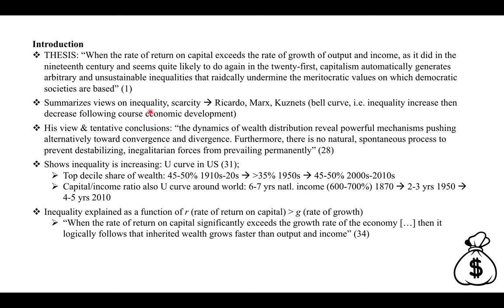He summarizes previous views on inequality and scarcity, especially Ricardo, Marx, and Kuznets. From Kuznets he borrows the bell curve idea that inequality increases and then decreases following the course of economic development — though Piketty actually argues against this and shows it's not the case. He lays out his view that the dynamics of wealth distribution reveal powerful mechanisms pushing alternatively toward convergence and divergence, and that there is no natural spontaneous process to prevent destabilizing inegalitarian forces from prevailing permanently.